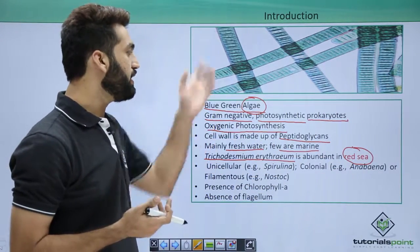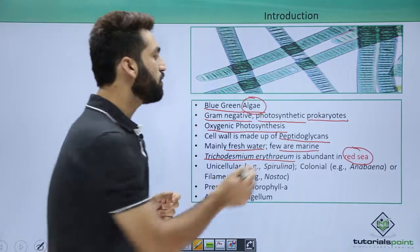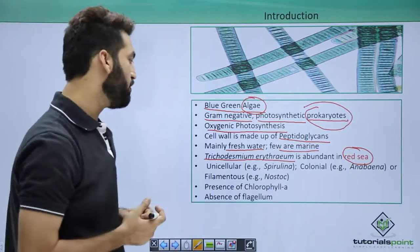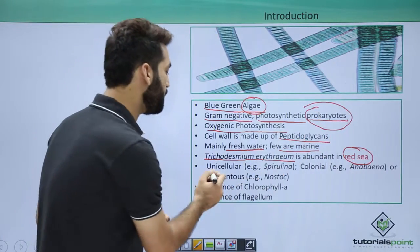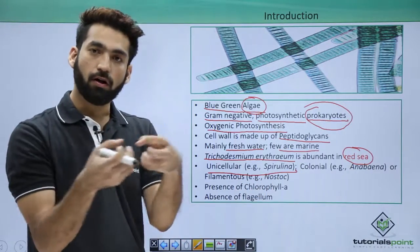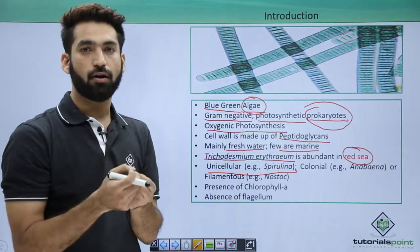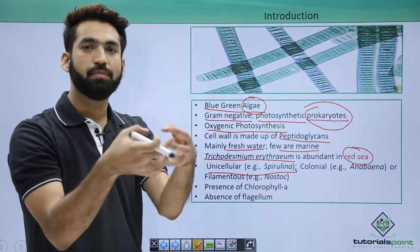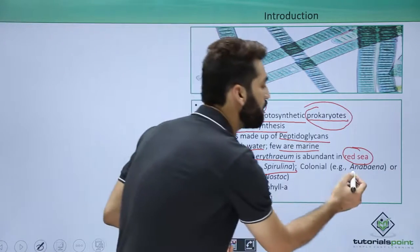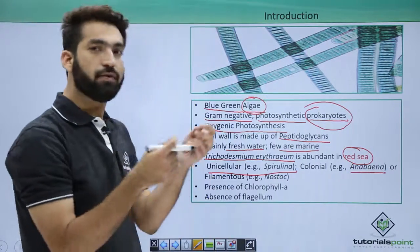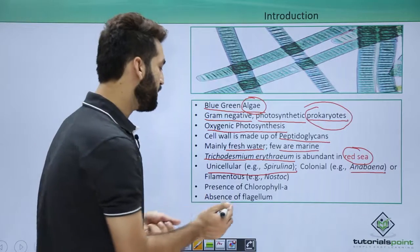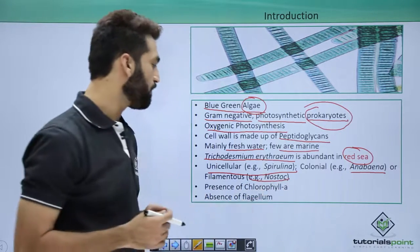Cyanobacteria are prokaryotes and prokaryotes are unicellular, so cyanobacteria can be unicellular — like Spirulina. But they can also form colonies and cluster together in spherical arrangements, like Anabaena. They can also form filamentous structures, as seen in Nostoc.